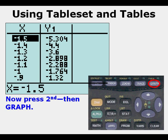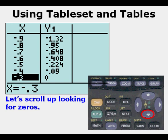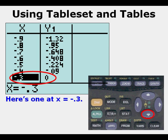We start at negative 1.5 just like we ordered, and now we scroll upward looking for zeros. We get to x equals negative 0.3, we get y equals zero when x equals negative 0.3. That's one of our roots.